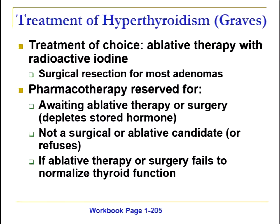The treatment of choice for Graves' disease is ablative therapy using radioactive iodine. Anything involving an adenoma warrants surgical resection — you want it out of the body. If it's a secondary cause due to an adenoma, you want surgical removal. We usually reserve pharmacotherapy for patients who are awaiting ablative therapy or surgery, as it helps deplete stored hormones in the thyroid gland, or for patients who are not surgical or ablative candidates — or who refuse, as in our case — or when ablative therapy or surgery wasn't sufficient to normalize thyroid levels.